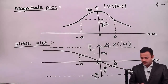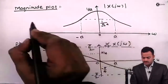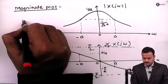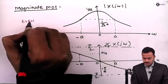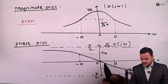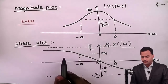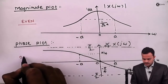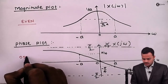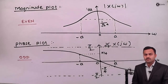The conclusion we can draw is: the magnitude plot is symmetric about the y-axis, so it is an even function. Whereas the phase plot is passing through the origin and exists in opposite quadrants, so the phase plot is always an odd function. Here is the end of problem number 1. Thank you.